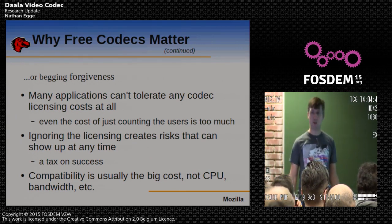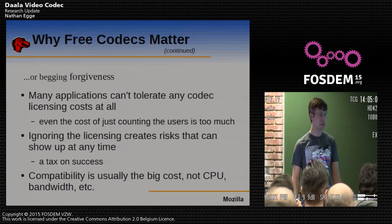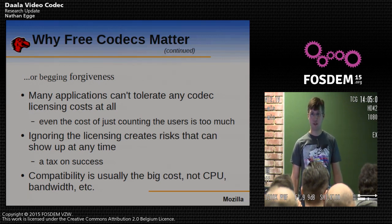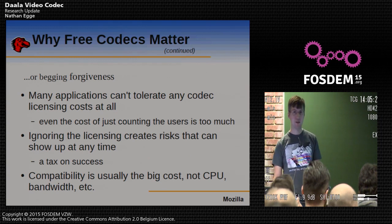I work at Mozilla and we ship a web browser you might have heard of, and we do this through a volunteer network of distributors — people who run FTP sites, who host the source code or binaries. If you're a small open source project distributing in the same fashion, we all have the same problem: we can't count how many people are using our products. For many of these licenses there's a per-user cost, and just keeping track of the number of users is burdensome.